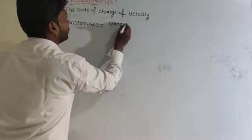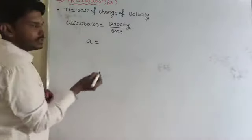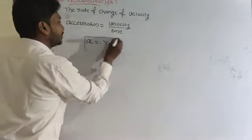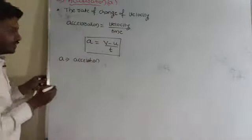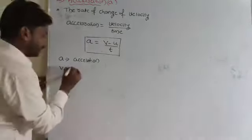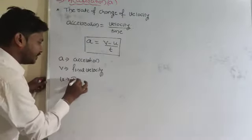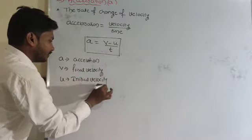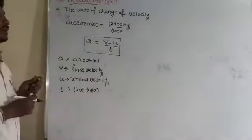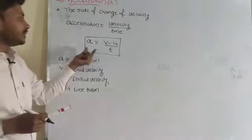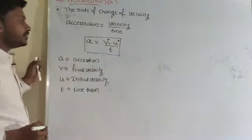It is the ratio of velocity of the body divided by time taken. In terms of mathematical expression, a is equal to v minus u divided by t, where 'a' represents acceleration, 'v' represents the final velocity, 'u' represents the initial velocity, and 't' represents the time taken.